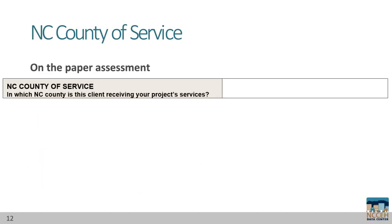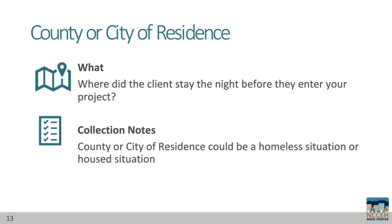This question is at the bottom of the first page of our paper assessment. Since there are 100 counties in North Carolina, we ask that you write in the name. The county or city of residence refers to where, geographically, the client was sleeping the night before entering your project. This location gives a geographic area regardless of whether it was a homeless or housed situation, and could be different from NC County of Service.